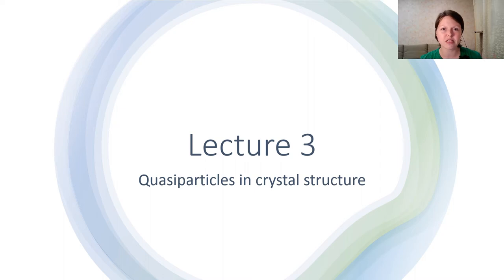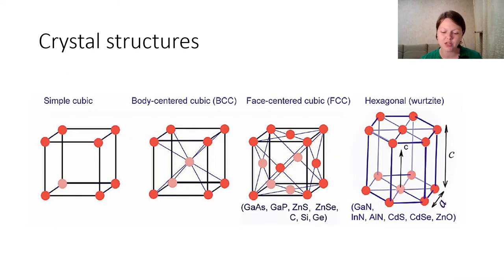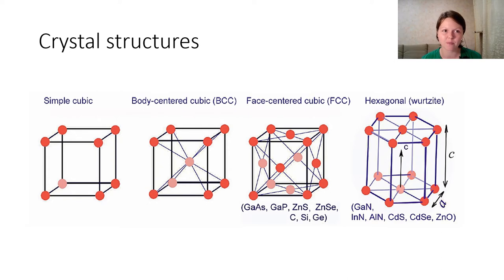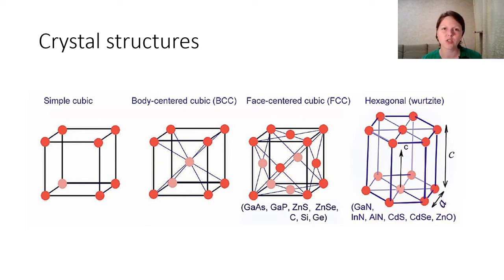During previous lectures we were talking about one-dimensional energy band approximation, but we all know that we are living in a real world that is three-dimensional. What about crystal structures? In solid-state physics we have seven types of Bravais crystal structures consisting of 14 space groups. The most widespread ones in solid-state physics are shown here.